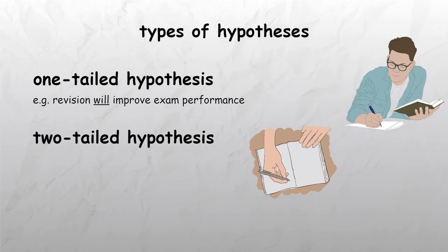Two-tailed hypotheses, also known as non-directional hypotheses, state that there is some sort of difference between two events. For example, revision will affect exam performance.